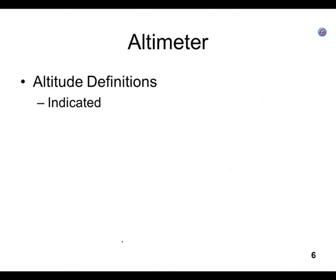Indicated altitude is whatever's showing on the gauge. With a good altimeter setting it's really MSL corrected for non-standard pressure — not perfect, but very close. Pressure altitude is obtained by setting the Kollsman window to 29.92.